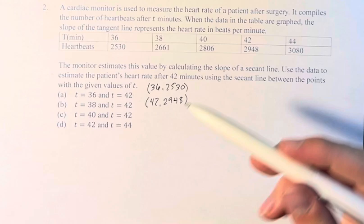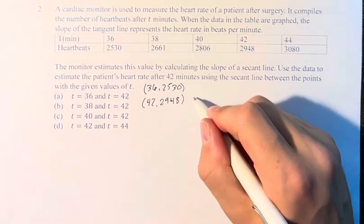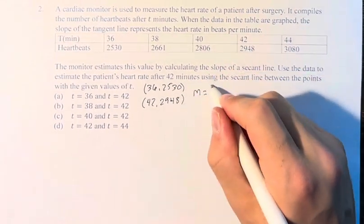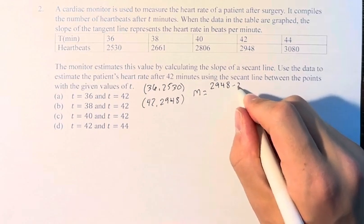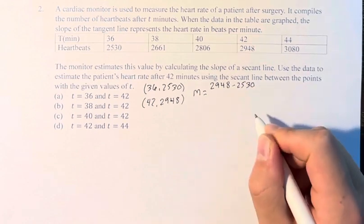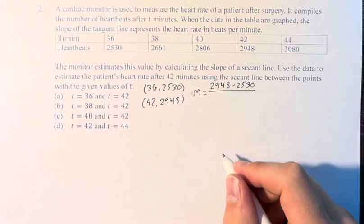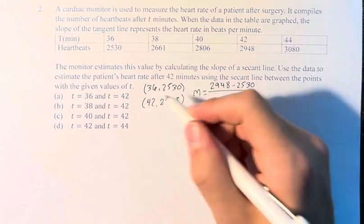And the slope of the secant line is just the slope between these two points. So our slope m is the change in y, so 2,948 minus 2,530, over the change in x, 42 minus 36.